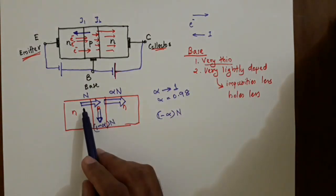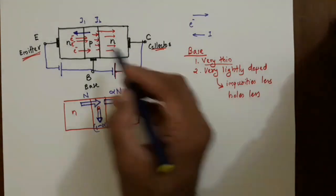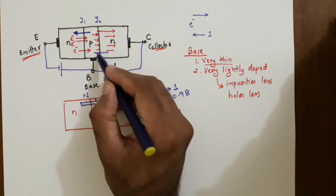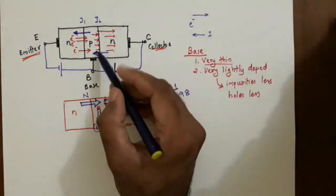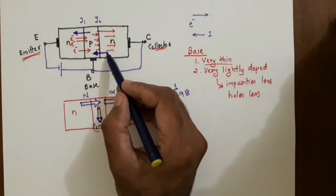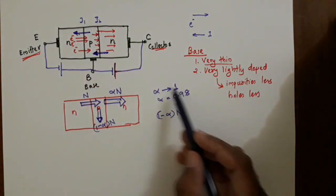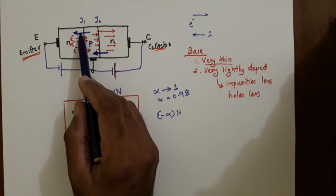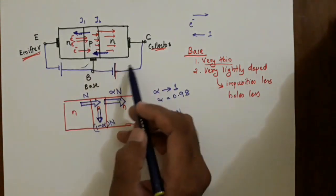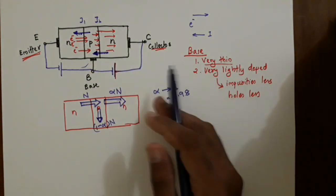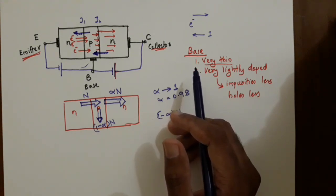We have transferred the same amount of current: since α·N electrons cross to the collector, the collector current magnitude is almost equal to the emitter current because alpha is close to 1. This transfers current from a low-resistance (forward-biased) circuit to a high-resistance (reverse-biased) circuit, achieving amplification. That is the fundamental purpose of a transistor.